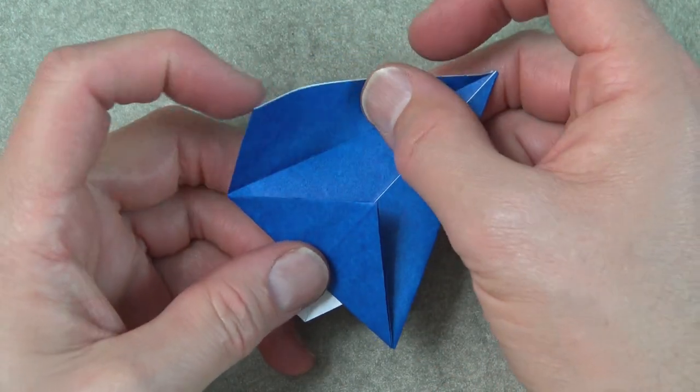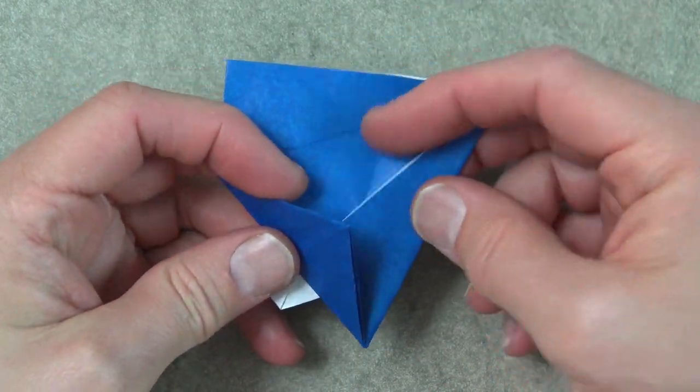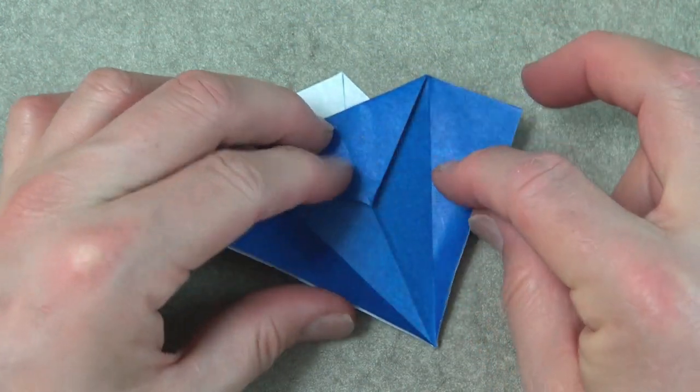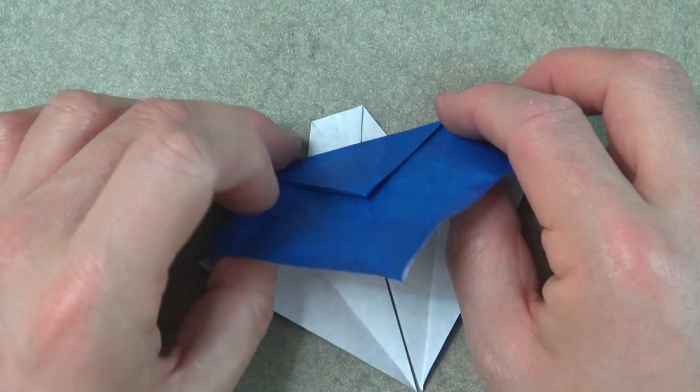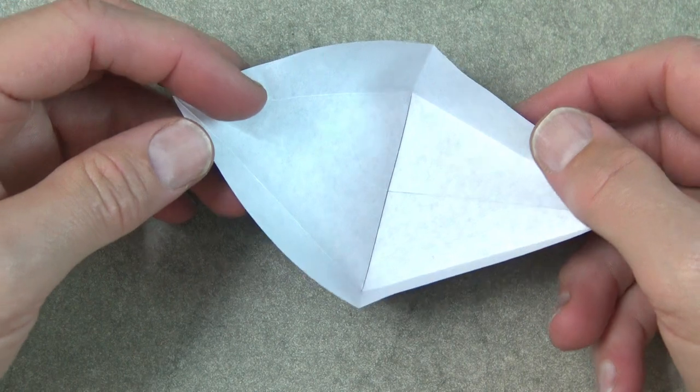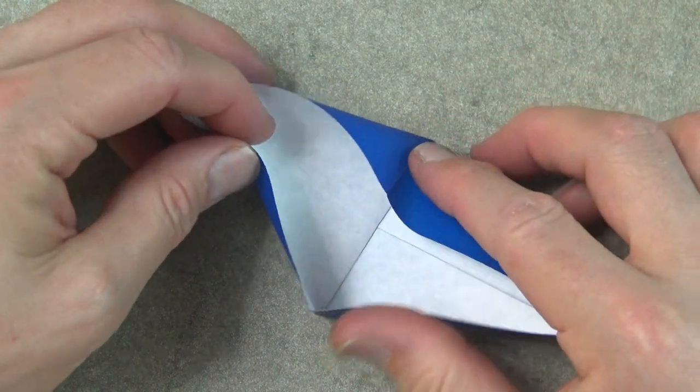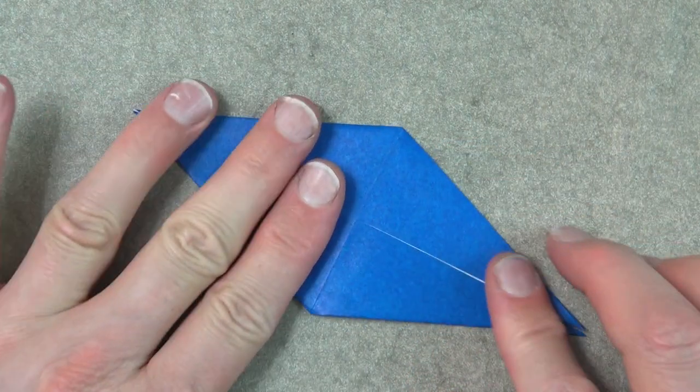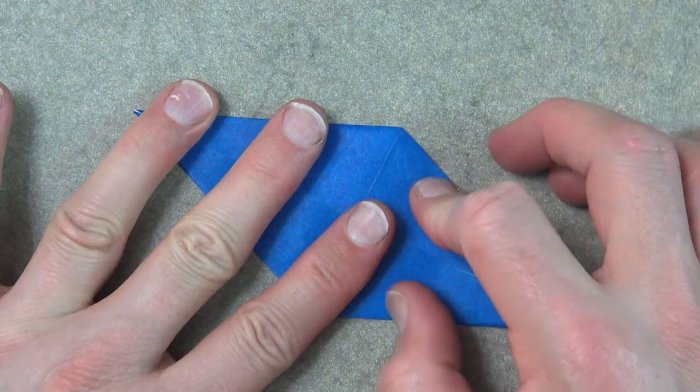Now unfold these two flaps but leave this flap folded. Rotate and lift this front flap up. So we have a boat. And now squash the sides of the boat. And the petal fold is complete.